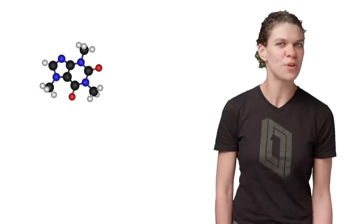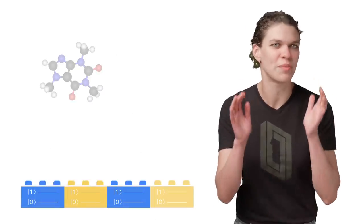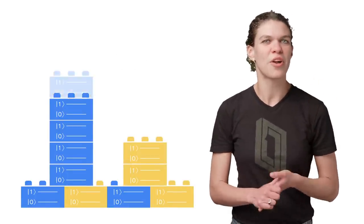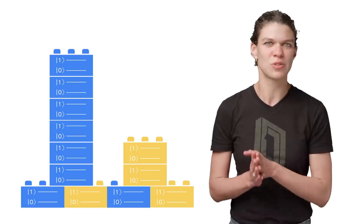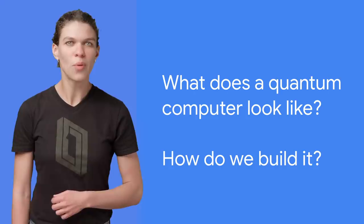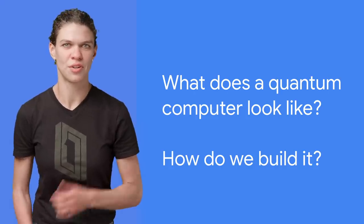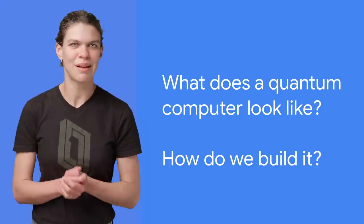Suppose instead that we could build chemistry models out of a quantum Lego set. Then the model would be built with the same physics that governs the system being modeled. In fact, chemistry and material simulations have appeared as an appealing near-term problem to approach using quantum hardware. We've finally reached the last question. What does a quantum computer look like, and how do we build it?